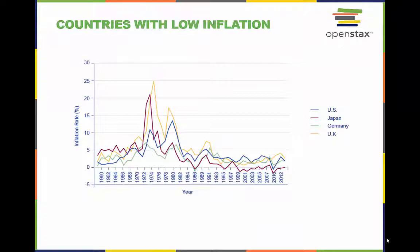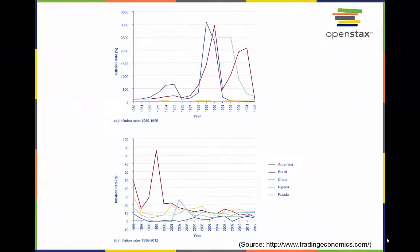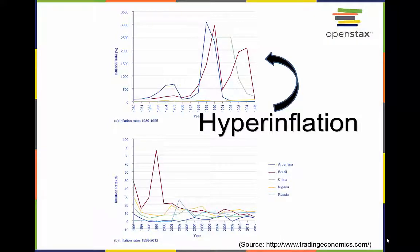This chart shows the annual percentage change in consumer prices compared with the previous year's consumer prices in the United States, the United Kingdom, Japan, and Germany. These economies are relatively stable with low inflation. In contrast, Argentina, Brazil, and Russia all experienced hyperinflation at some point between the mid-1980s and the mid-1990s. China and Nigeria also had high inflation rates in the mid-1990s, though their rates have come down over the last two decades.